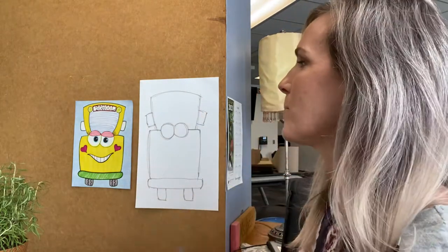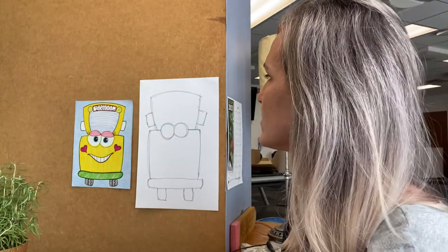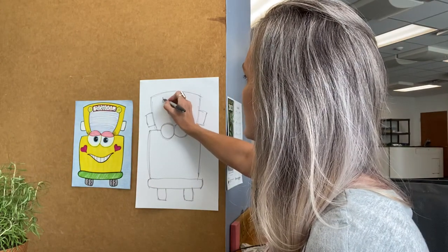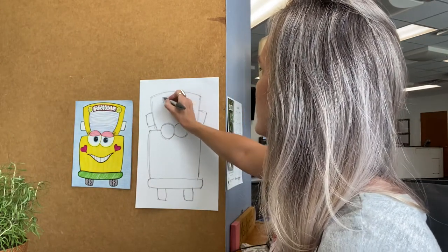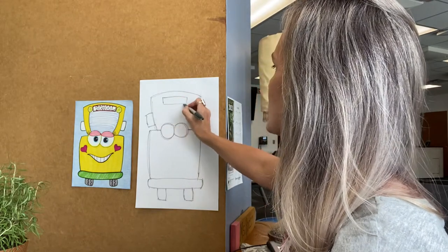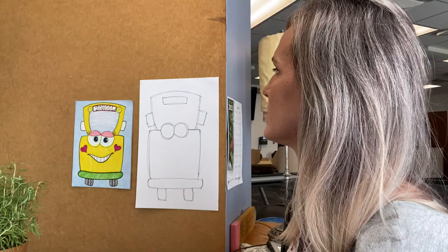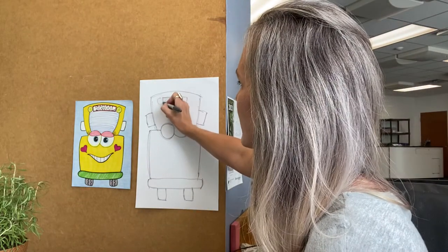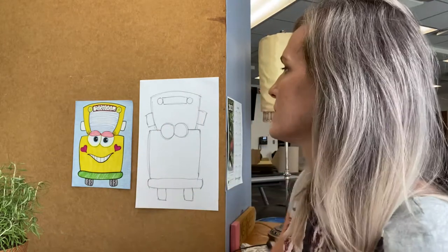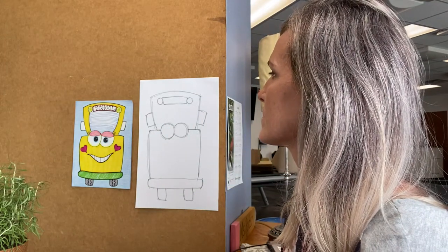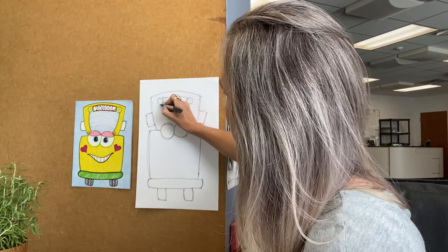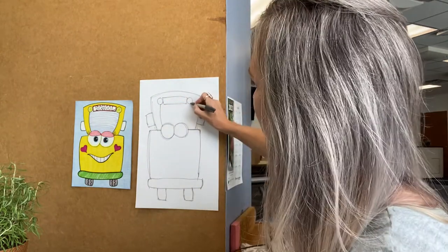Now starting at the top we're going to go back and add the details. The first detail we're going to add is our school sign, so it's a rectangle shape and it's at the top of the top square. We've also got lights beside that that are circles and we're going to draw the lines of the windshield dropping down from those circles to the eyes.